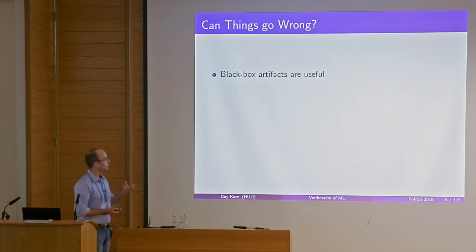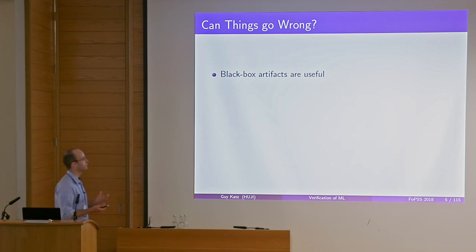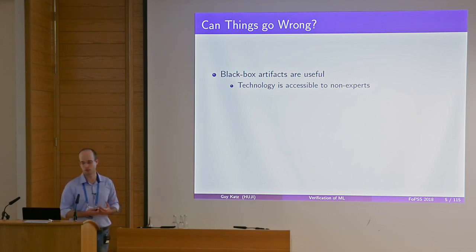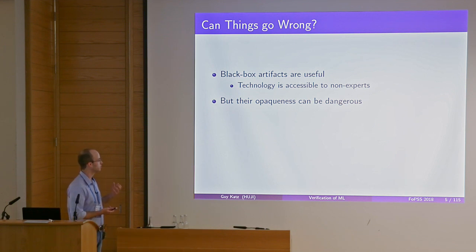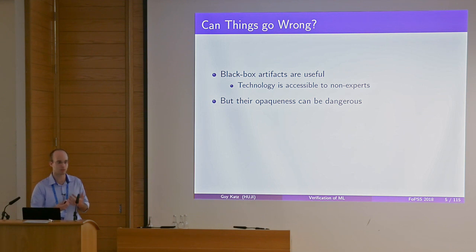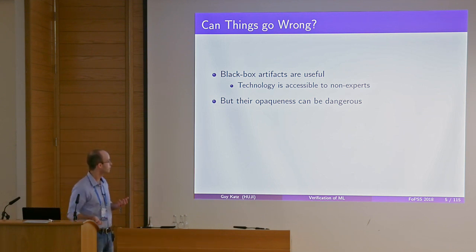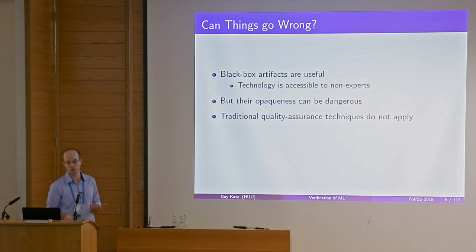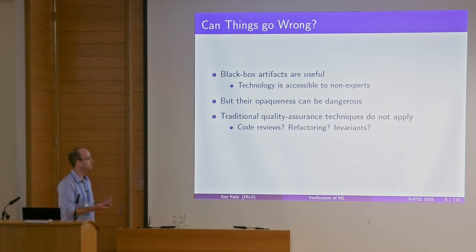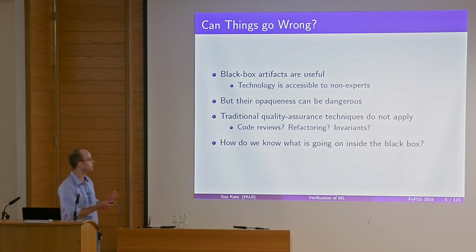While these black box artifacts are really useful — they allow non-experts to use this technology; you can go on Coursera, take a short course, and produce them — this raises interesting questions. We don't really understand what's going on inside these black boxes. They're opaque; we don't understand how they make decisions. Traditional quality assurance practices — things like code reviews, refactoring, writing invariants, comments — don't really apply to artifacts generated using machine learning. The question is: how do we gain confidence that the system is behaving as it should?